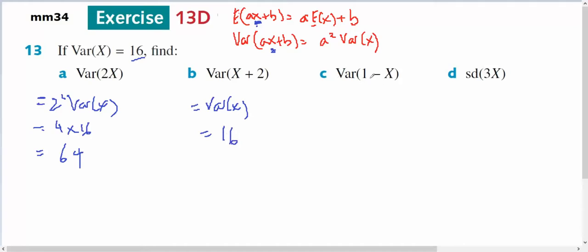If you plus 1, that's a translation, that's not going to change the variance. If you reflect it over the y-axis, that won't change the variance. That's going to equal the variance of x, therefore it's going to equal 16.